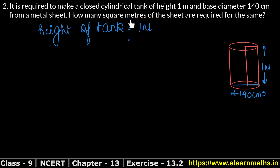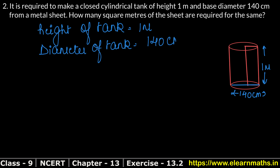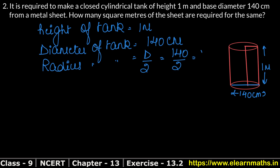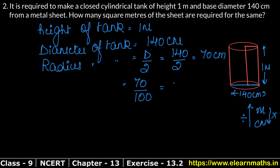We will not change height to cm. The diameter of the tank is 140 cm. So the radius is 140 ÷ 2 = 70 cm. To change cm to meters, we divide by 100. So the radius is 0.70 meters.